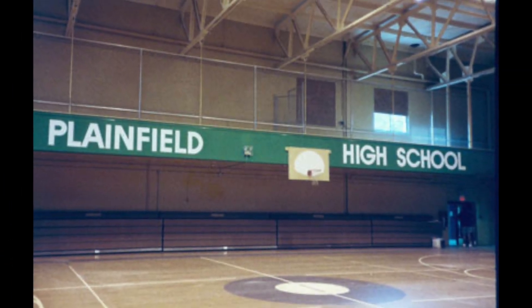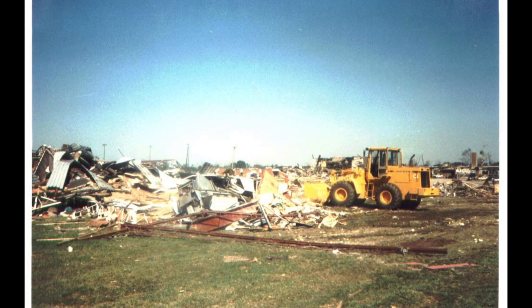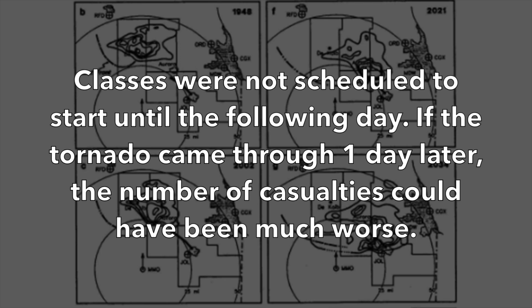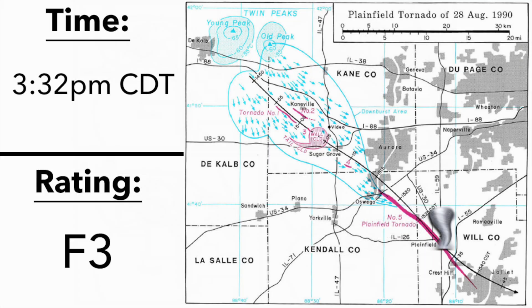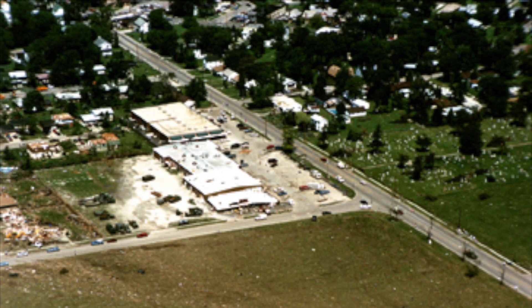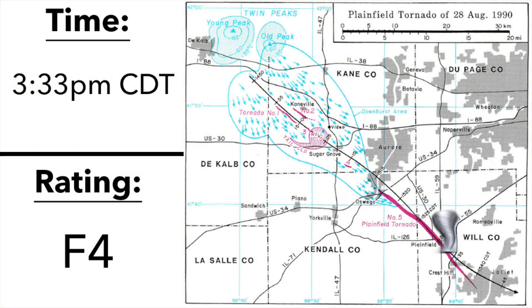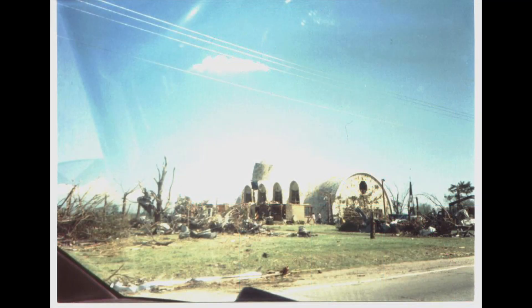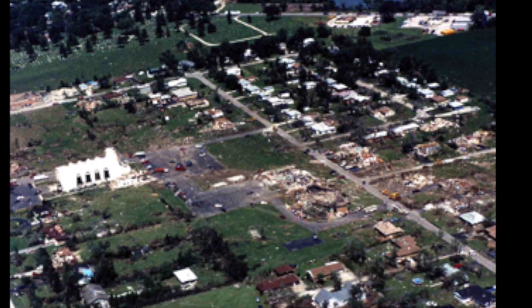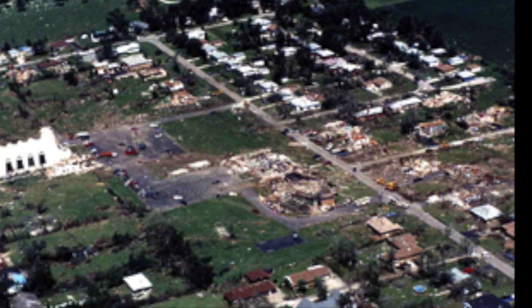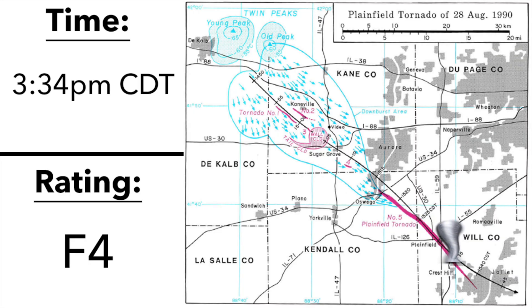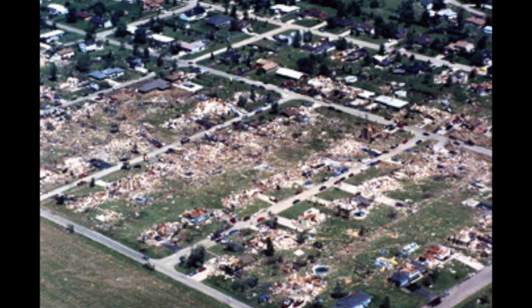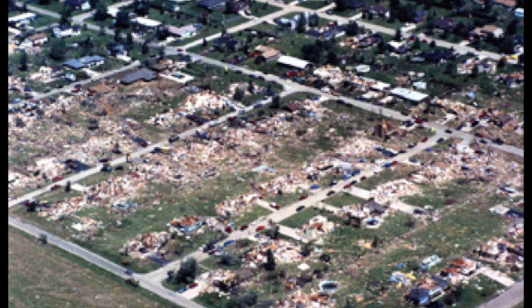Unfortunately, three faculty members preparing for classes lost their lives. Some saving grace was that classes were not scheduled to start until the following day — if the tornado had come through one day later, the number of casualties could have been much worse. At 3:32 p.m., Plainfield Plaza was struck with F3 wind speeds as the tornado crossed Route 59, the main north-south artery through Plainfield. At 3:33 p.m., St. Mary Immaculate Parish was struck. The sanctuary was spared a direct hit but suffered heavy damage, and its adjacent grade school was destroyed. Sadly, the principal, a music teacher, and a maintenance worker were killed, as winds were now in the F4 range.